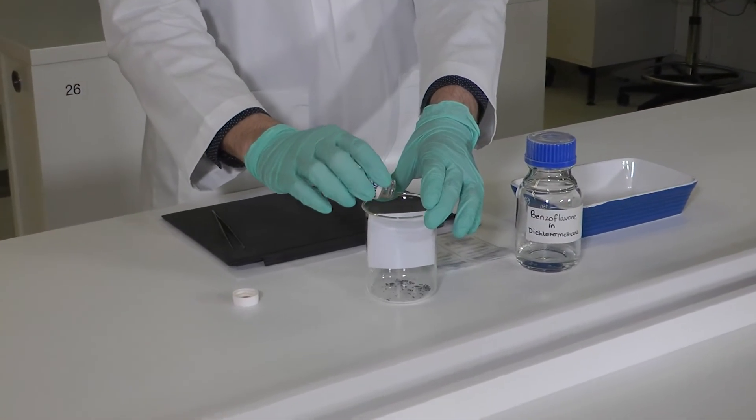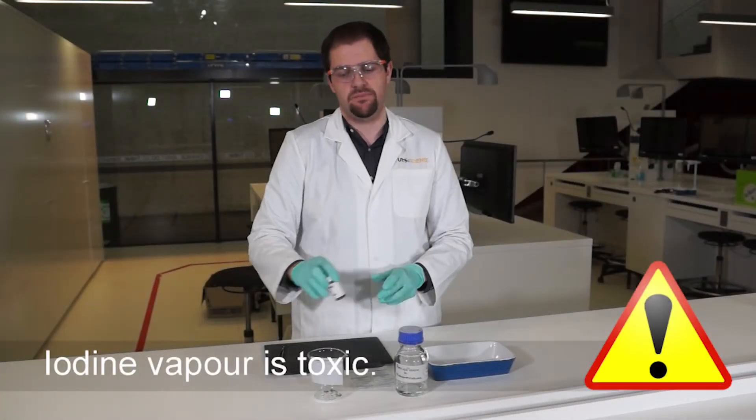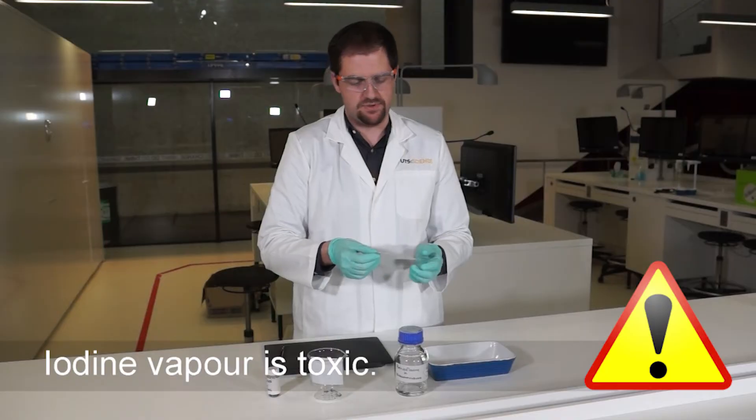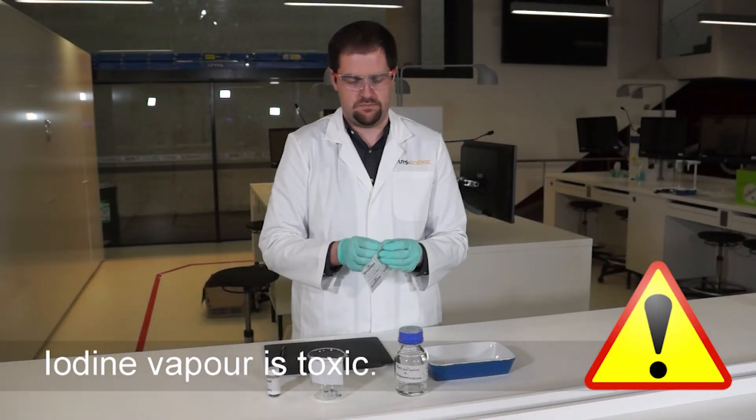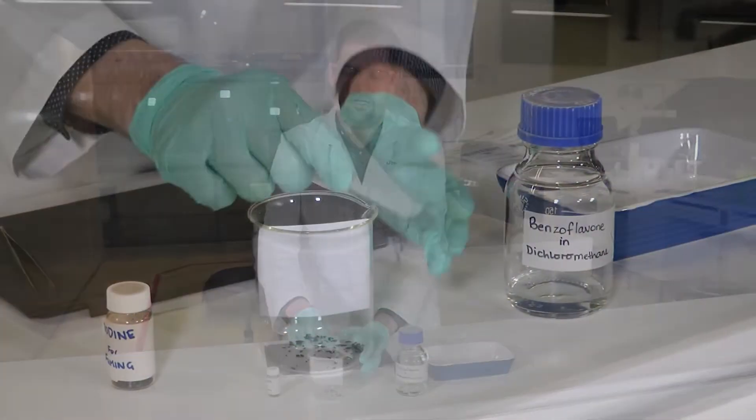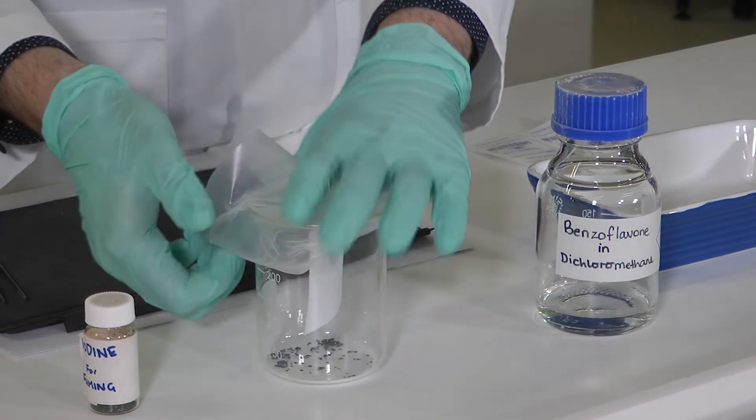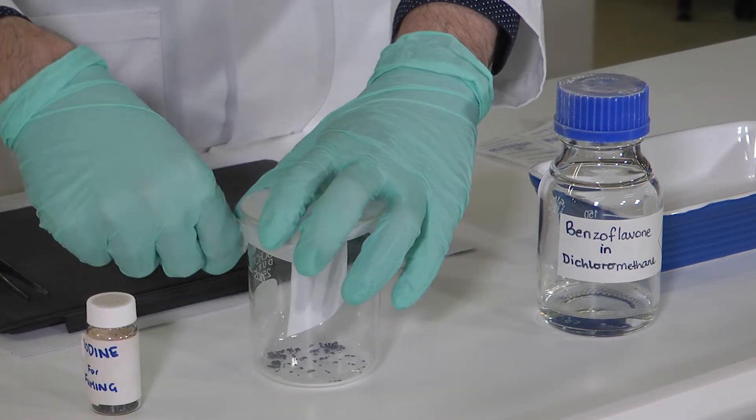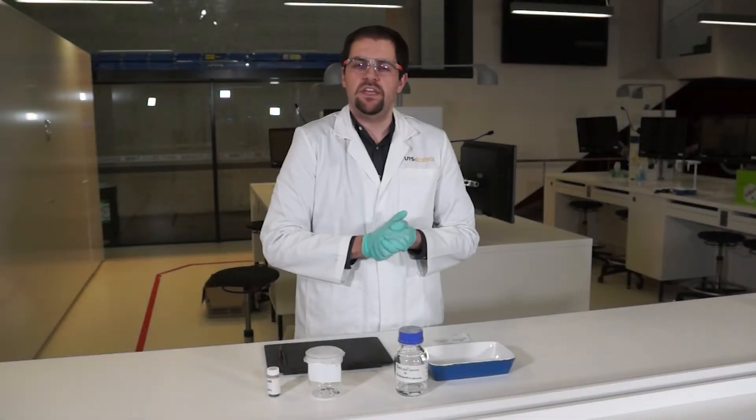Now iodine vapor is actually quite toxic, so in order to make sure that we don't have any health risks, we're going to seal it up using parafilm. By sealing it up, the iodine vapors are going to float around our beaker and make sure that none of those vapors are escaping.